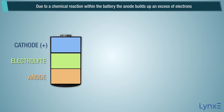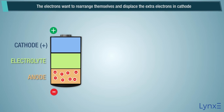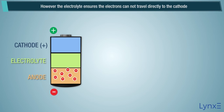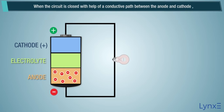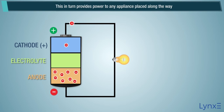Due to a chemical reaction within the battery, the anode builds up an excess of electrons. This causes an electrical difference between the anode and the cathode. The electrons want to rearrange themselves and displace the extra electrons in the cathode. However, the electrolyte ensures the electrons cannot travel directly to the cathode. When the circuit is closed with the help of a conductive path between the anode and cathode, the electrons are able to travel to the cathode.